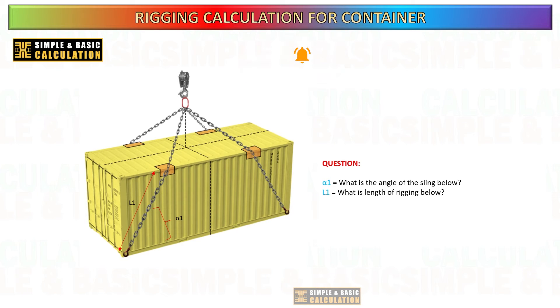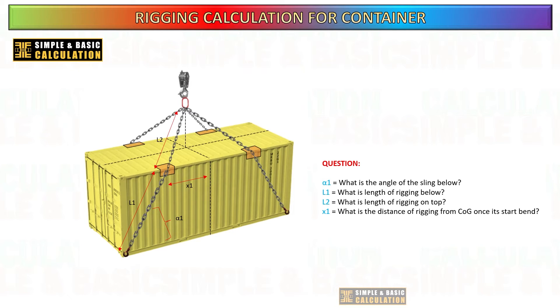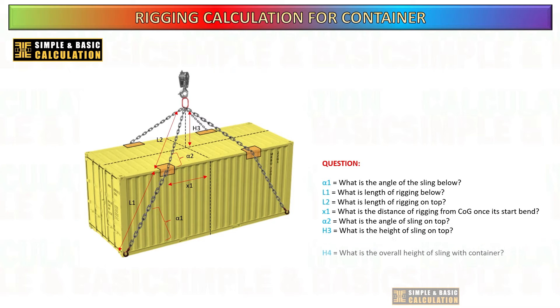First in the list is, what is the angle of the sling below? Second, what is the length of the rigging below? Third, what is the length of the rigging on top? Fourth, what is the distance of rigging from the COG of the container once it starts to bend? Fifth, what is the angle of sling on top? Sixth, what is the height of sling on top? Seventh, what is the overall height of sling plus container?